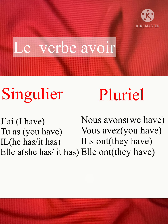The verb avoir — 'j'ai' means 'I have', 'tu as' means 'you have', 'il a' means 'he has' or 'it has', 'elle a' means 'she has' or 'it has', 'nous avons' means 'we have', 'vous avez' means 'you have', 'ils ont' means 'they have', and 'elles ont' also means 'they have'.